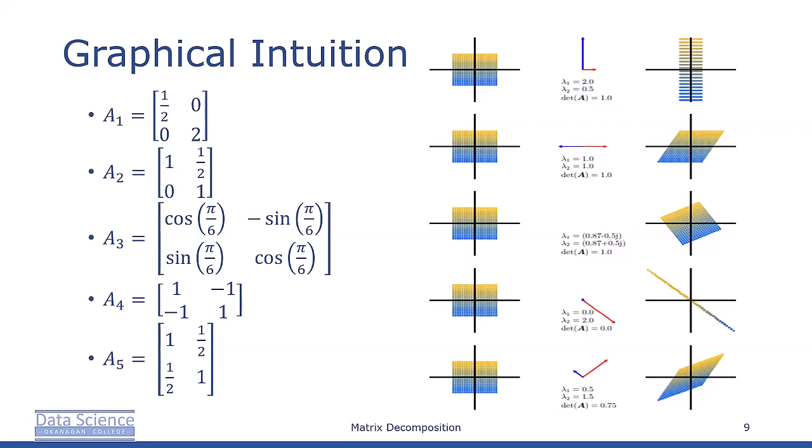In our fifth example, we have a shear and stretch mapping that shrinks the space by 75%, as the determinant of A is 0.75. It stretches along the blue eigenvector by a factor of 1.5, and compresses along the orthogonal eigenvector by a factor of 0.5.